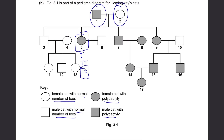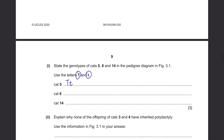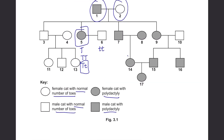Cat 6 is a male cat with a normal number of toes. Since polydactyly is dominant, normal toes means it is homozygous recessive (tt). Cat 14 is a female cat with polydactyly, and both its parents have polydactyly, so each carries at least one T. However, since the parents of cat 8 are not shown, it cannot be determined whether they are homozygous dominant or heterozygous. So cat 14's genotype can be either homozygous dominant (TT) or heterozygous (Tt).